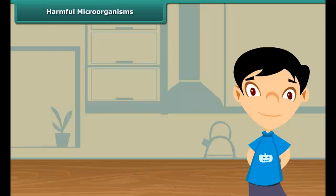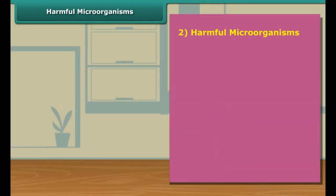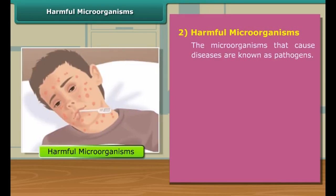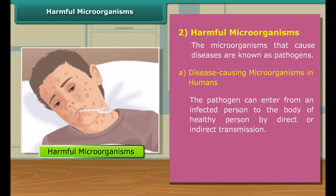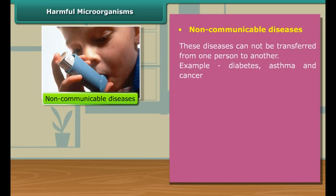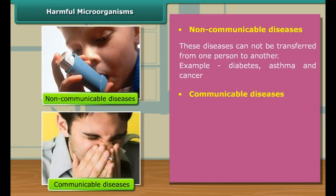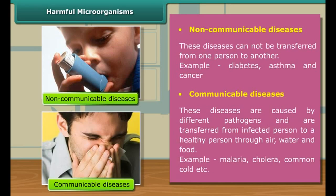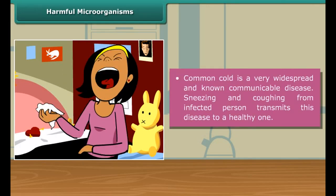After discussing helpful and friendly microorganisms, let's learn about harmful microorganisms — starting with microorganisms that cause diseases in humans and animals. The microorganisms that cause diseases are known as pathogens. We can classify diseases into two categories: non-communicable and non-infectious diseases, and communicable or infectious diseases. Non-communicable diseases cannot be transferred from one person to another, while communicable diseases are transferred from an infected person to a healthy person by means of air, water, food, etc. Common cold is a very common example of a communicable disease.